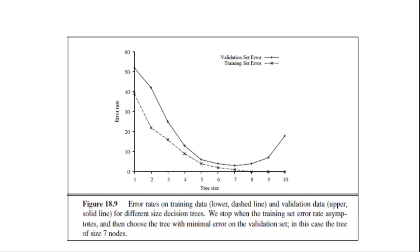Finally, we should evaluate the returned hypothesis on a separate test set. This approach requires that the learning algorithm accept a parameter size and deliver a hypothesis of that size. For decision tree learning, size can be the number of nodes, and we can modify the decision tree learner to take the number of nodes as input and build the tree breadth-first rather than depth-first, stopping when it reaches the desired number of nodes.